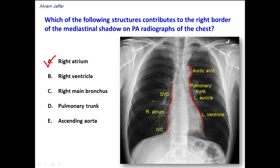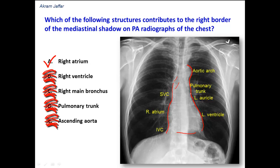But let's look at the other options. The right ventricle does not contribute to the right or left borders of the heart — it touches the diaphragm. The right main bronchus is formed behind the mediastinal shadow and does not participate in the formation of the right border of the heart. The pulmonary trunk, as we have seen, contributes to the formation of the left border.